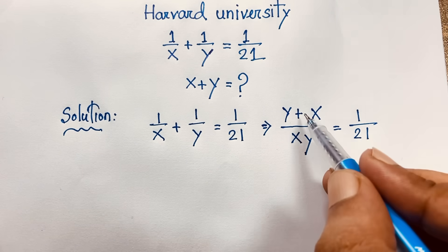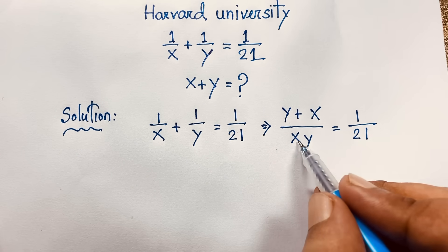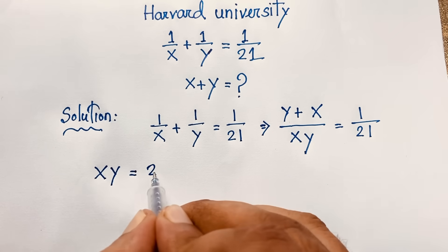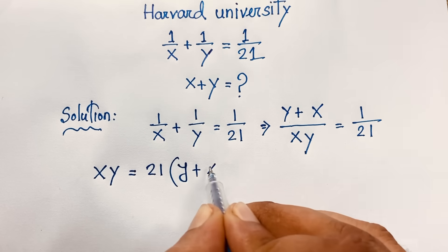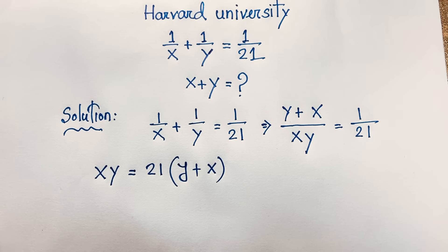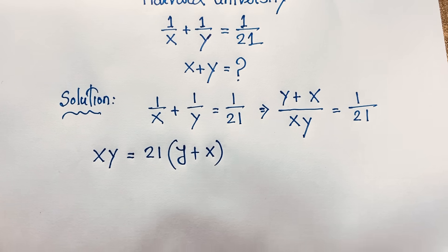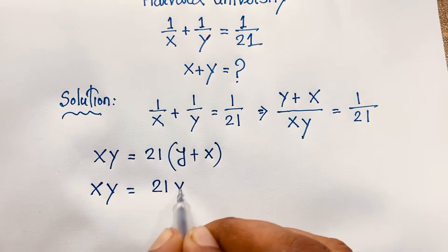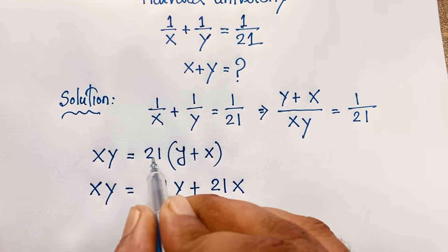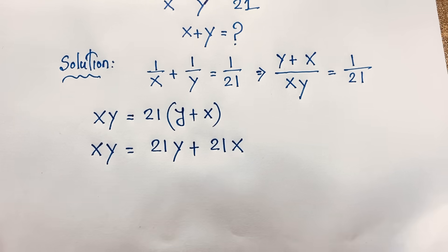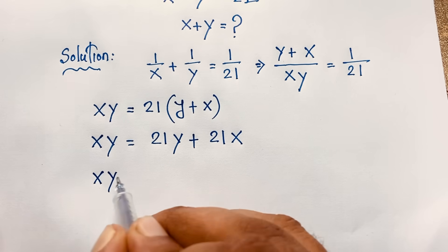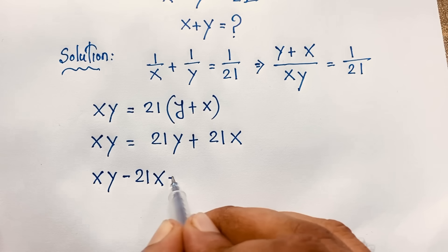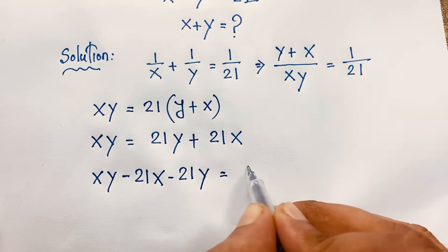Now, cross-multiplying: xy times 1 gives xy on the left, and 21 times y plus x on the right. So we find xy is equal to 21y plus 21x. Moving terms, it gives xy minus 21x minus 21y is equal to 0.